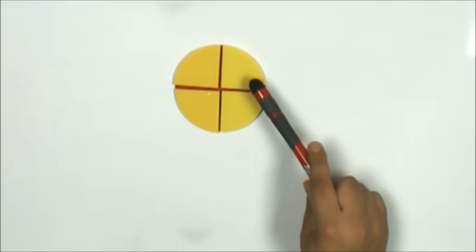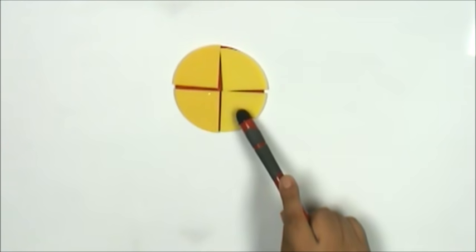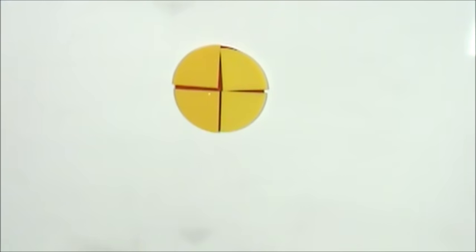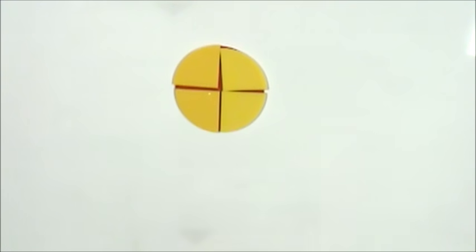This fractional part is one fourth, this fractional part is one fourth of the whole, this fractional part is one fourth, this fractional part is one fourth. One whole circle is composed of four fourths.